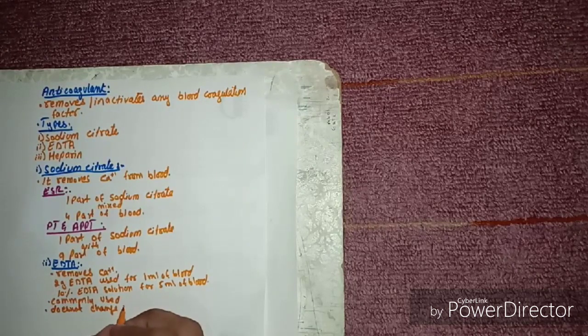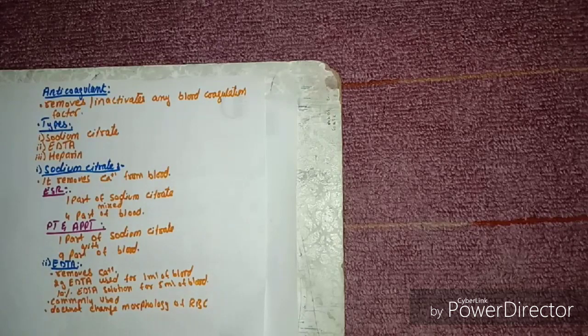Regarding the merits and demerits of EDTA: first the merits — it is the best and most commonly used anticoagulant. It does not change the morphology of RBCs, so if we want to prepare a blood smear, we can use EDTA. It is used for tests such as hemoglobin, RBC count, TLC, DLC, and PCV.